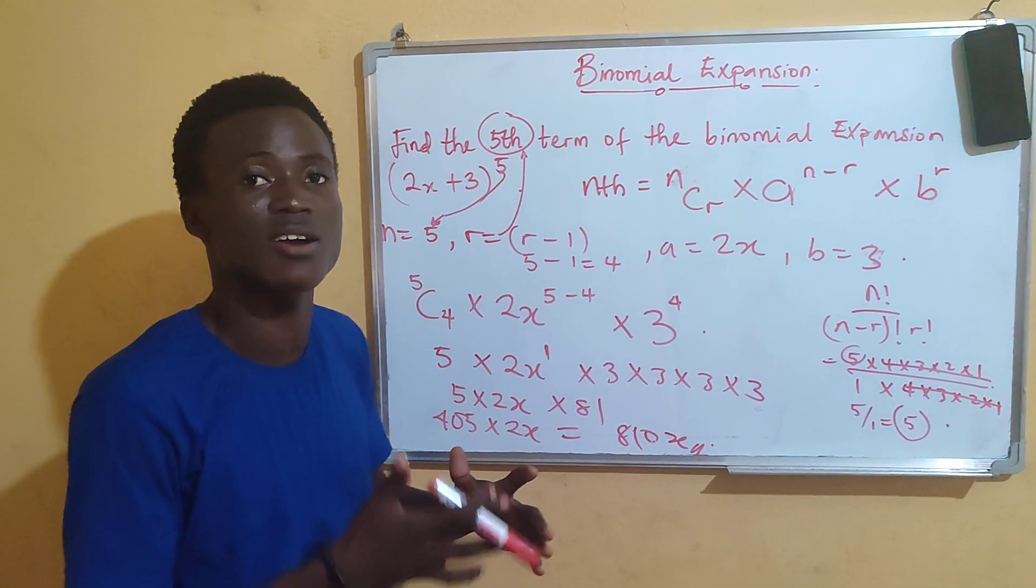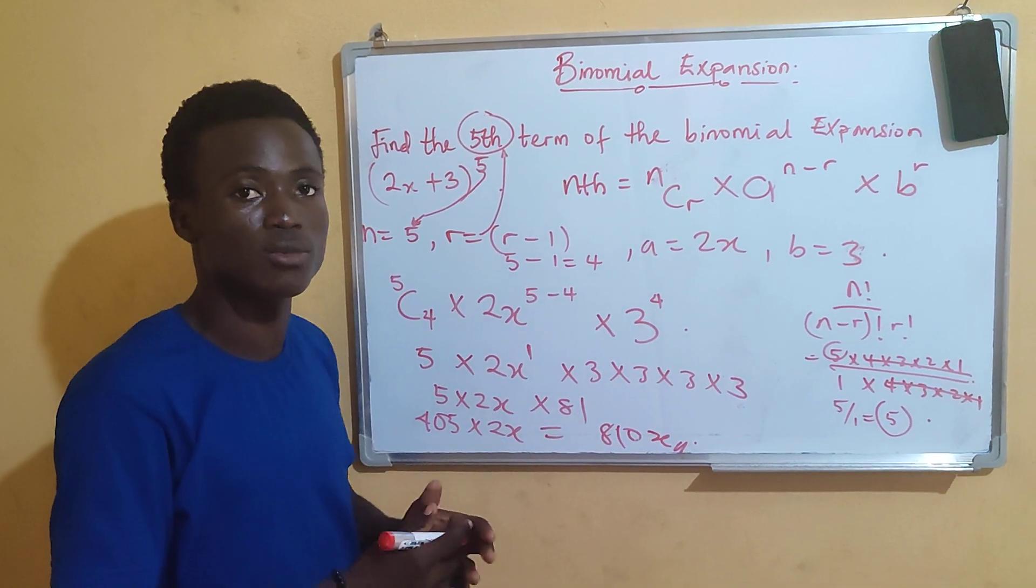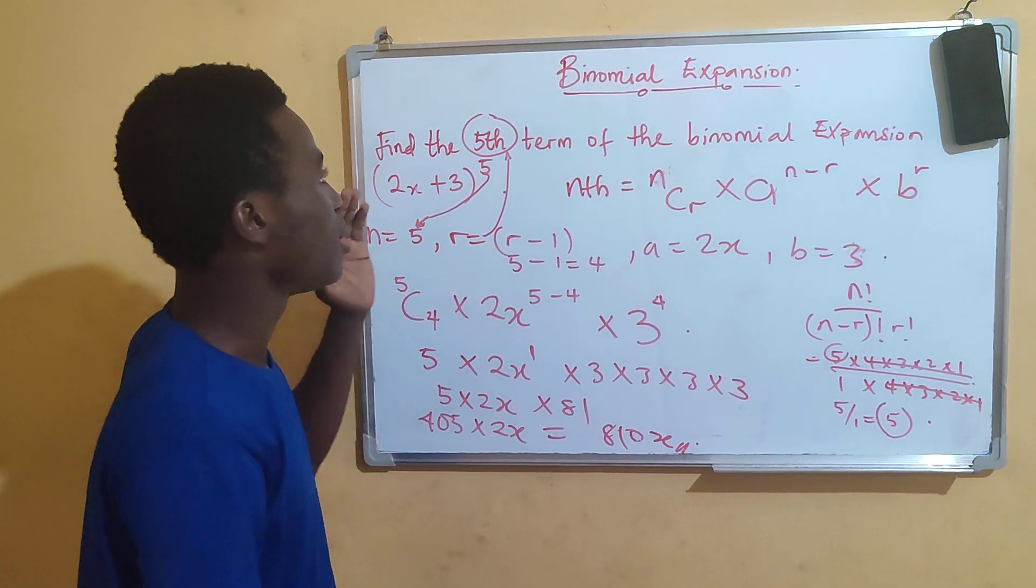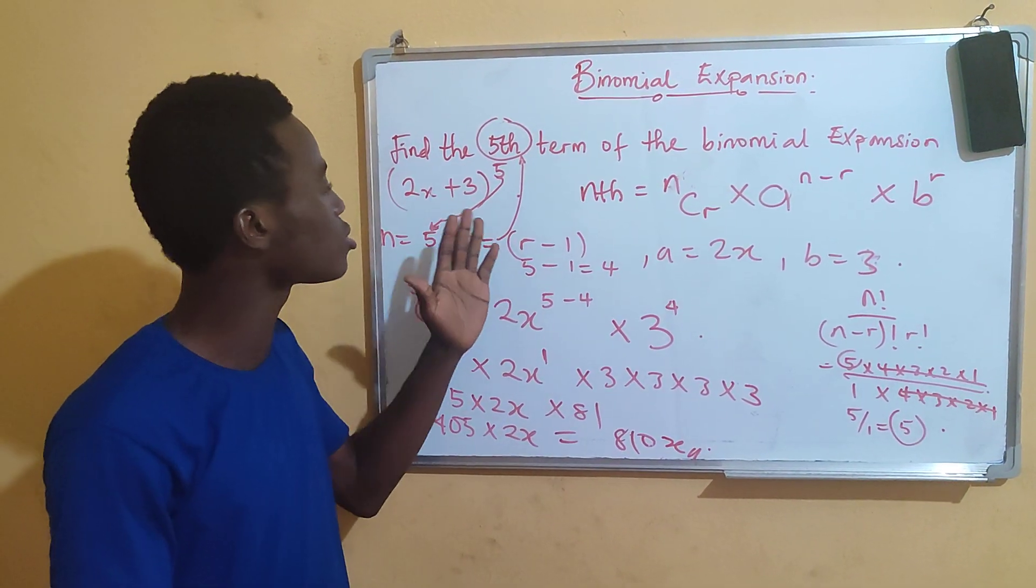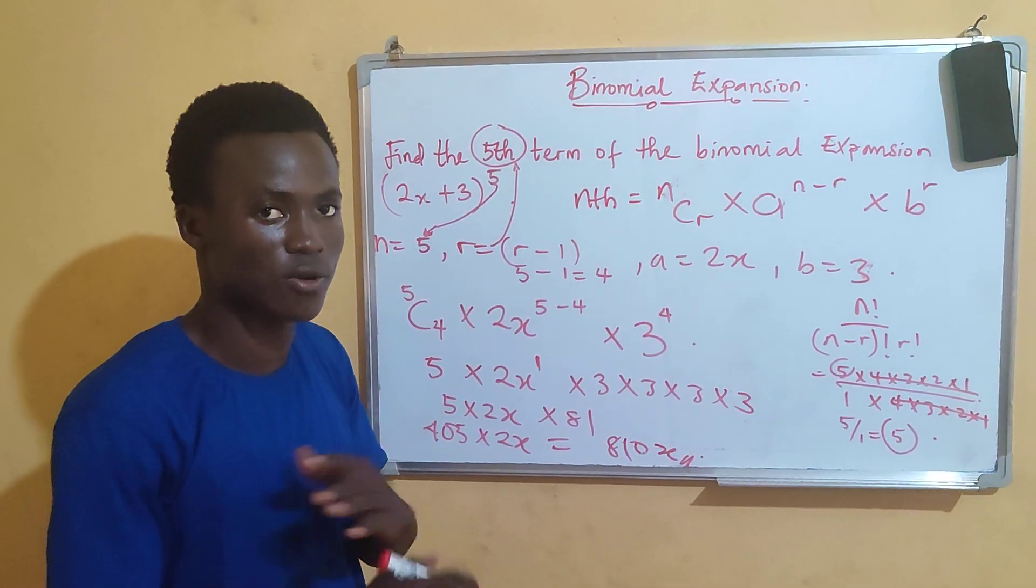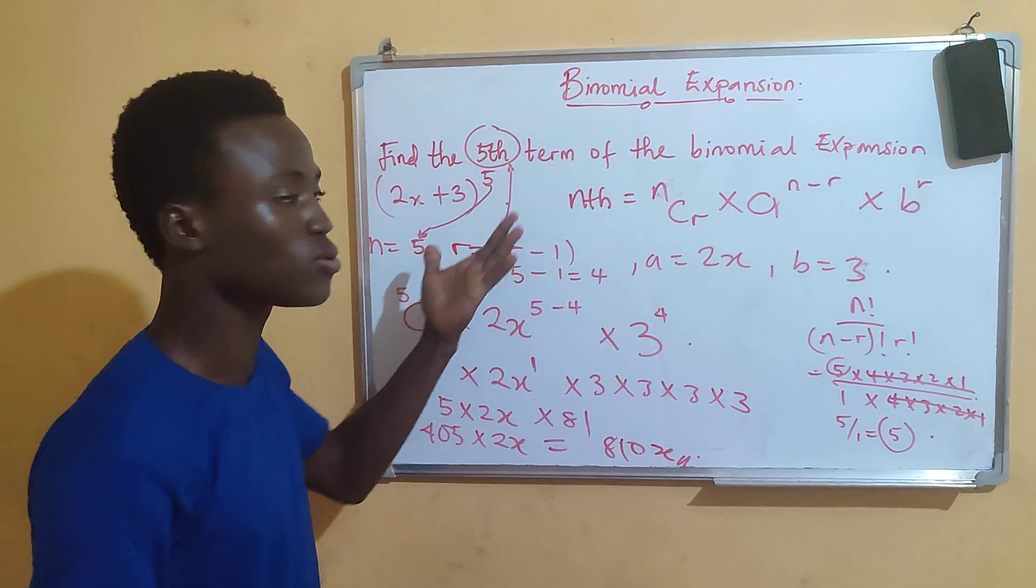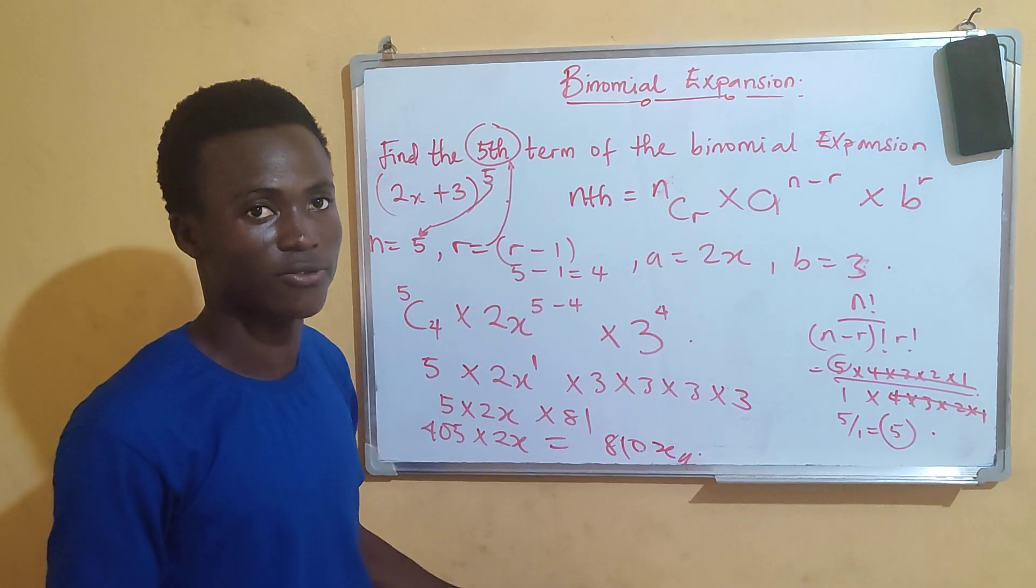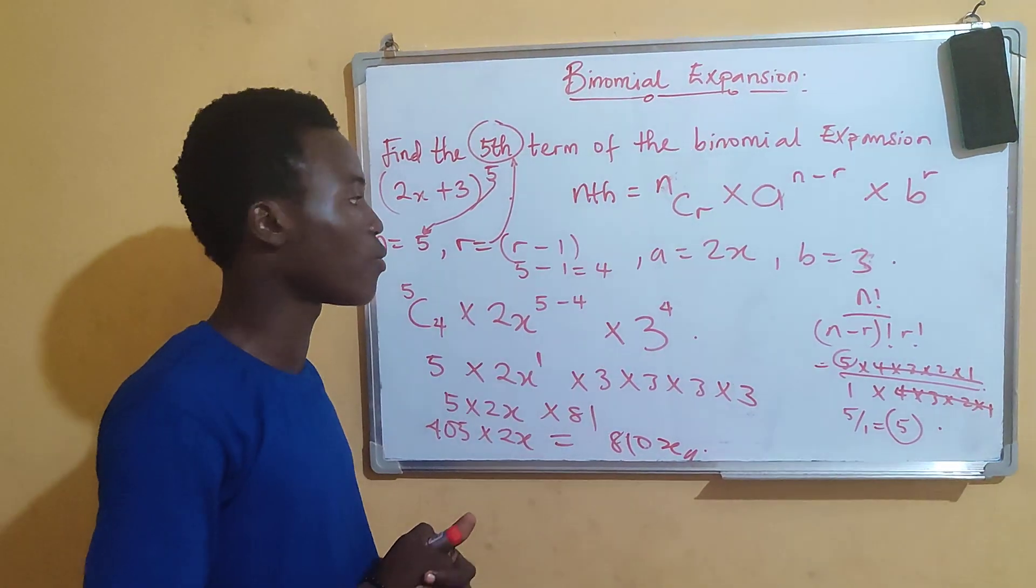You can check the video on Pascal triangle and the permutation and combination to have the full understanding. By binomial expansion, you can make use of Pascal triangle to solve everything. But if you still want to make use of the formula, this is how to apply the formula. I hope you get what we've done.